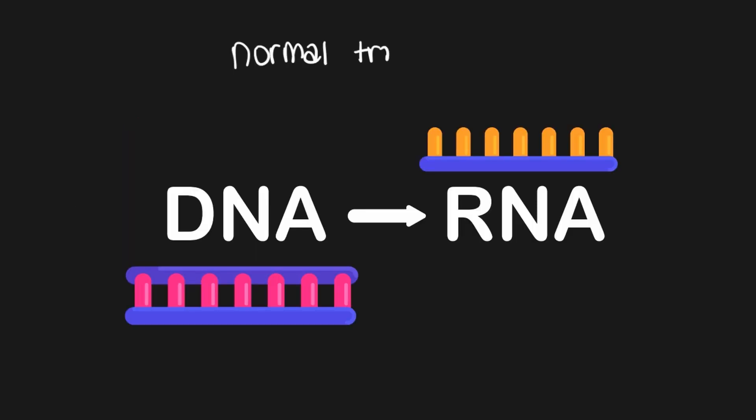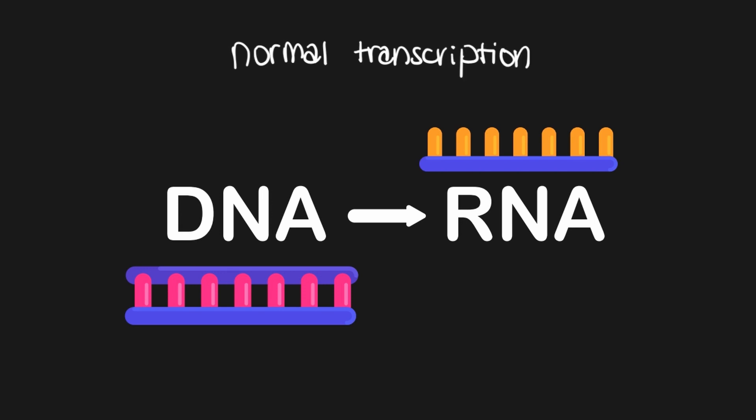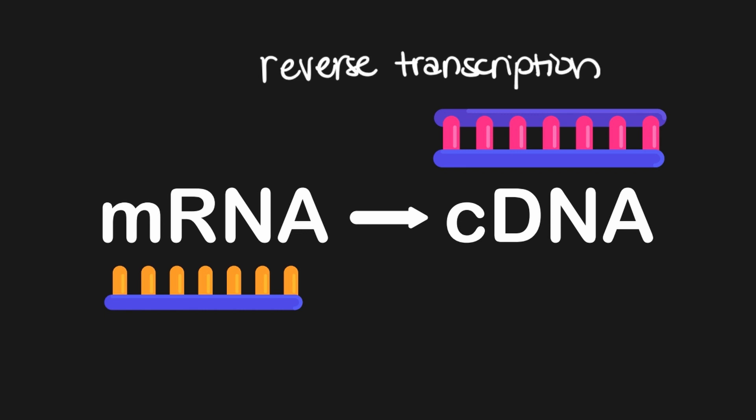Unlike normal DNA, which is replicated from a template strand of DNA, cDNA uses an mRNA strand as its template and the enzyme reverse transcriptase, which, as its name suggests, runs transcription in reverse — converting RNA to DNA instead of the other way around, as transcription normally would.